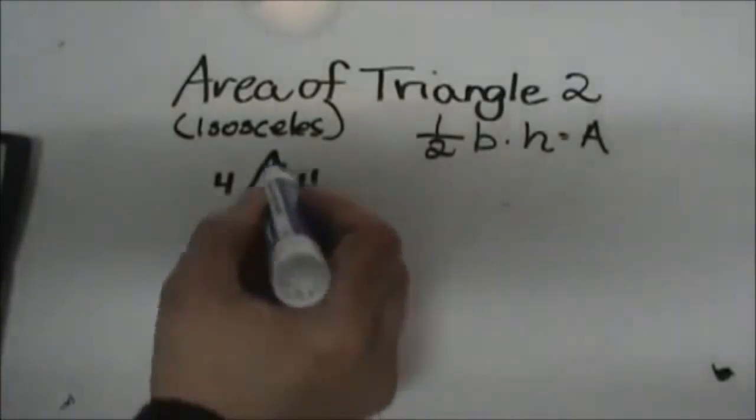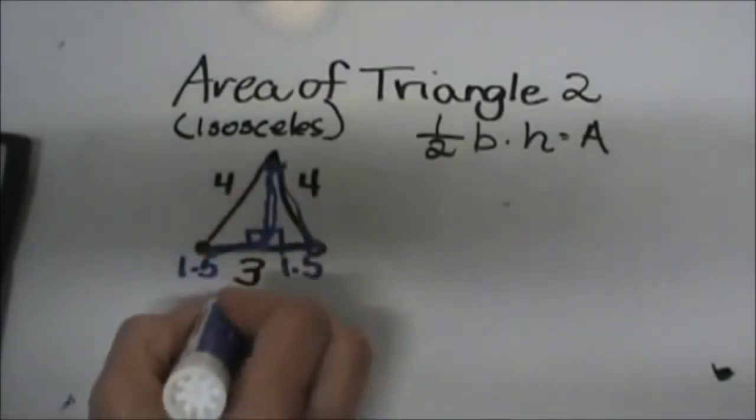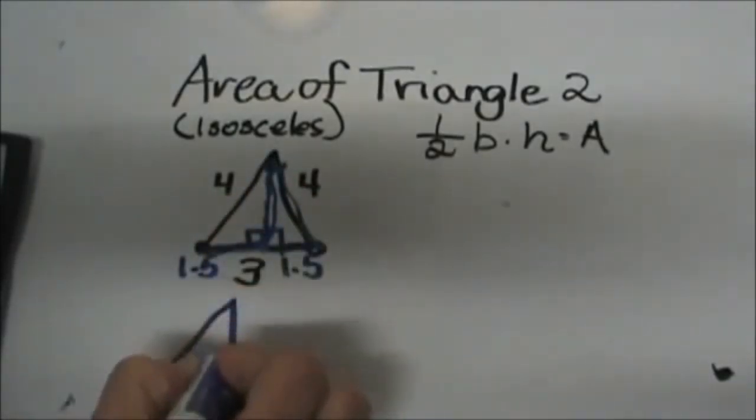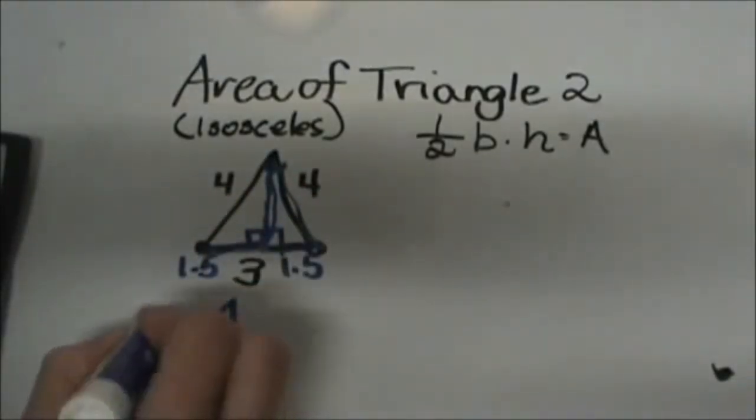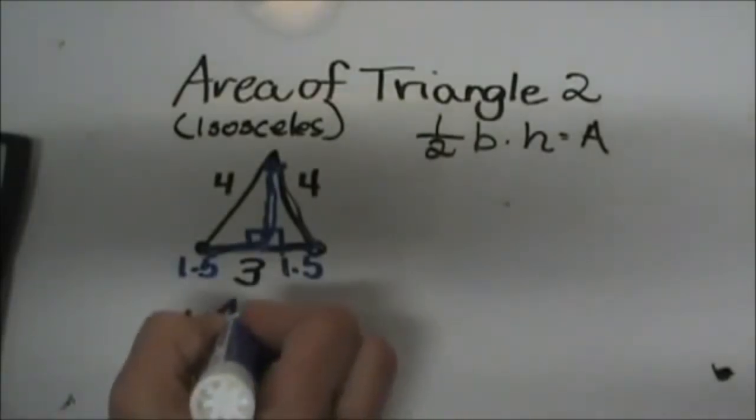So now I can use this right triangle to figure out this missing side. So I'm going to draw that below here. My hypotenuse is still 4 but this leg is now 1.5 and we don't know this other leg so I'm going to call it A.